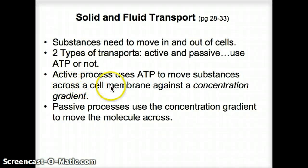An active process uses ATP to move a substance across the cell membrane against a concentration gradient. That's like pushing a bike up the hill, and that needs energy, so that's why it uses ATP.